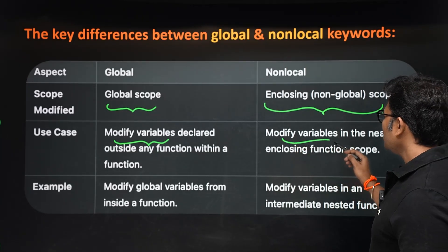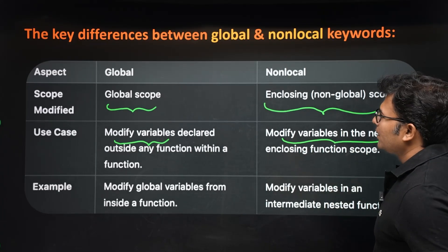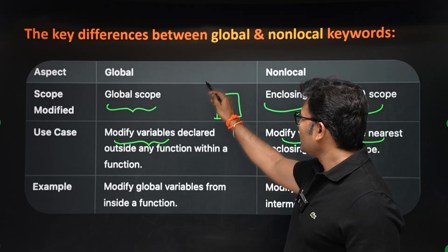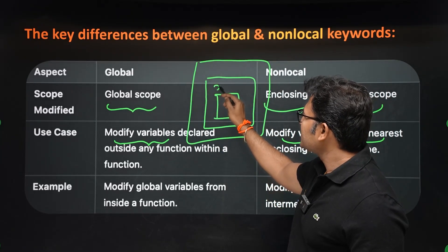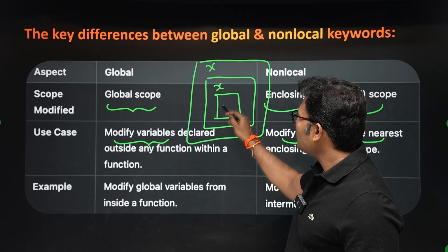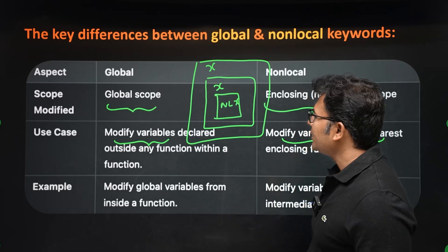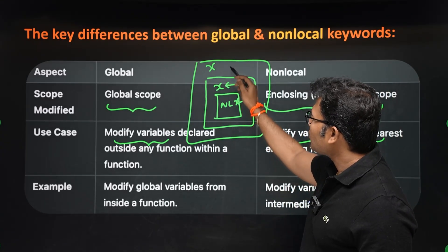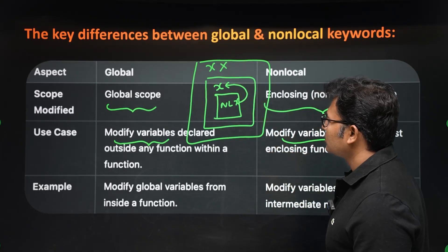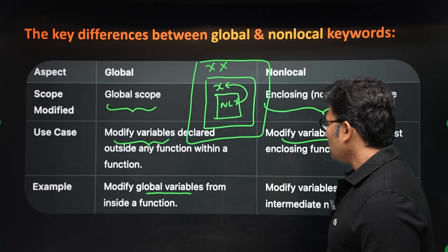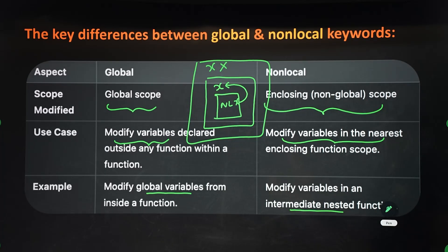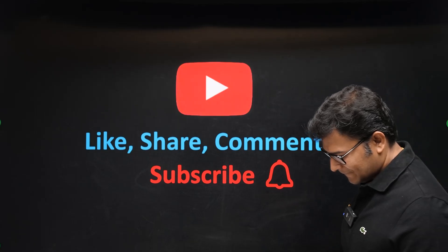There can be multiple levels of functions, and non-local x always refers to the closest enclosing variable — not any outer one. So to modify global variables use the global keyword, and to modify enclosing-scope variables in nested functions use the non-local keyword.